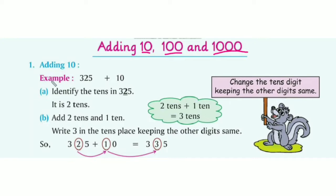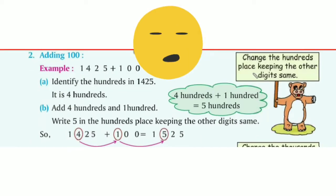Adding tens — here is an example. We need to add 10 to 325. First, we need to identify the tens in 325: it is two tens. Now we add two tens and one ten — two tens plus one ten equals three tens. We keep all the digits the same and only the tens digit will change. So our answer is 335.